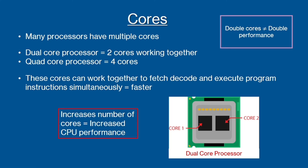Increasing any of the three factors mentioned today — clock speed, cache size, or number of cores — will increase the speed of the processor.